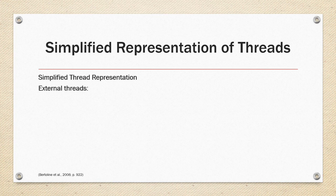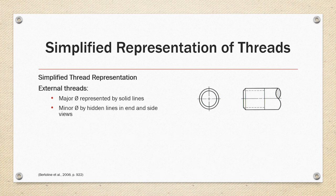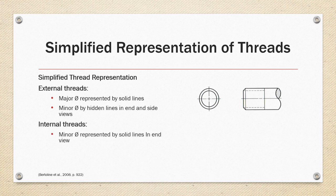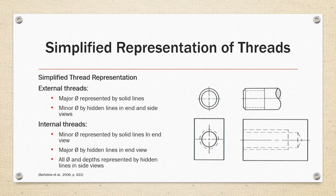Simplified representation of threads. For external threads, the major diameter is represented by solid lines. The minor diameter by hidden lines in the end and side views. Internal threads, the minor diameter is represented by solid lines in the end view. And the major diameter by hidden lines in the end view. All diameters and depths are represented by hidden lines in the side view, as shown on the right.